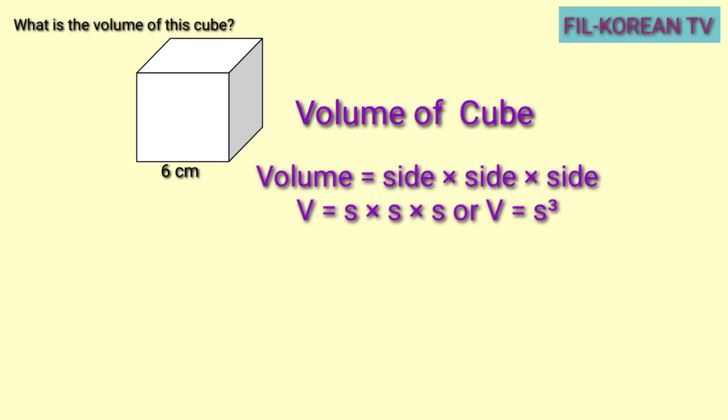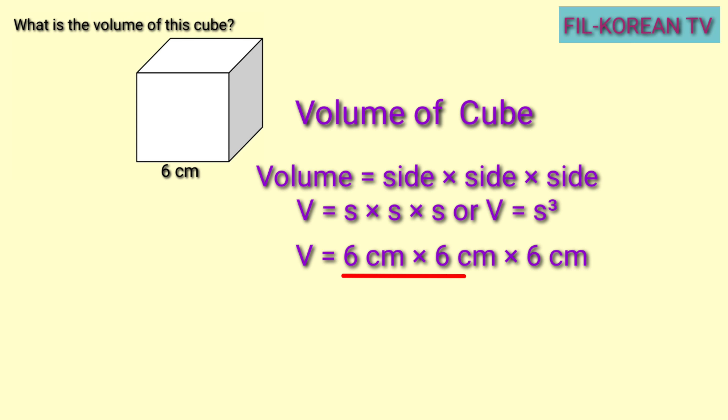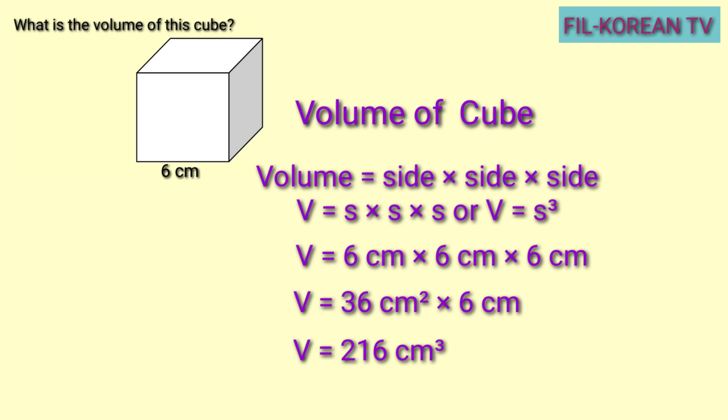Isolve na natin ang problem. I-substitute natin yung given dito sa formula. Ang sukat ng side ng cube na ito ay 6 centimeters. Volume equals 6 centimeters times 6 centimeters times 6 centimeters. I-multiply natin. 6 times 6 equals 36, kaya magiging 36 square centimeters. Then i-multiply natin ito sa 6. 36 times 6 equals 216. At ang unit of measure ay magiging cubic centimeters. Ang answer ay volume equals 216 cubic centimeters.